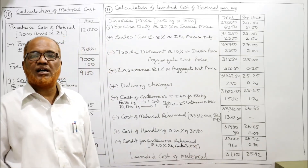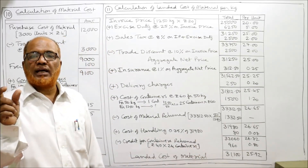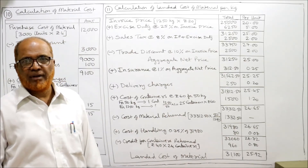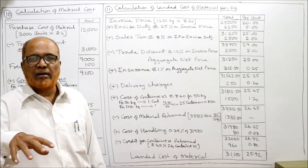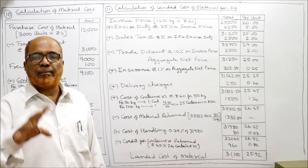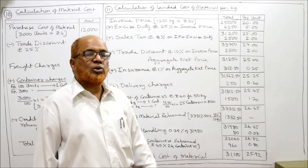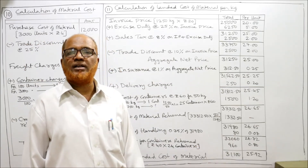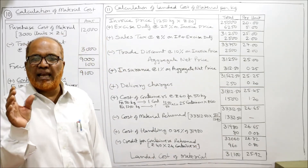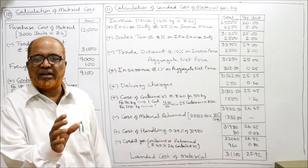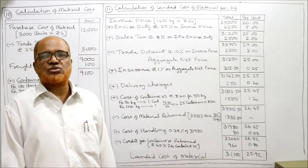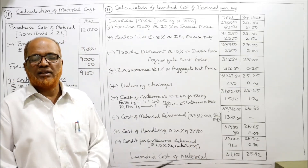The total landed cost of material is 31,100 rupees. Since the question asks for cost per kilogram, we divide by 1200 kg to get 25.92 rupees per kilogram. This is the landed cost of Material X per kilogram.